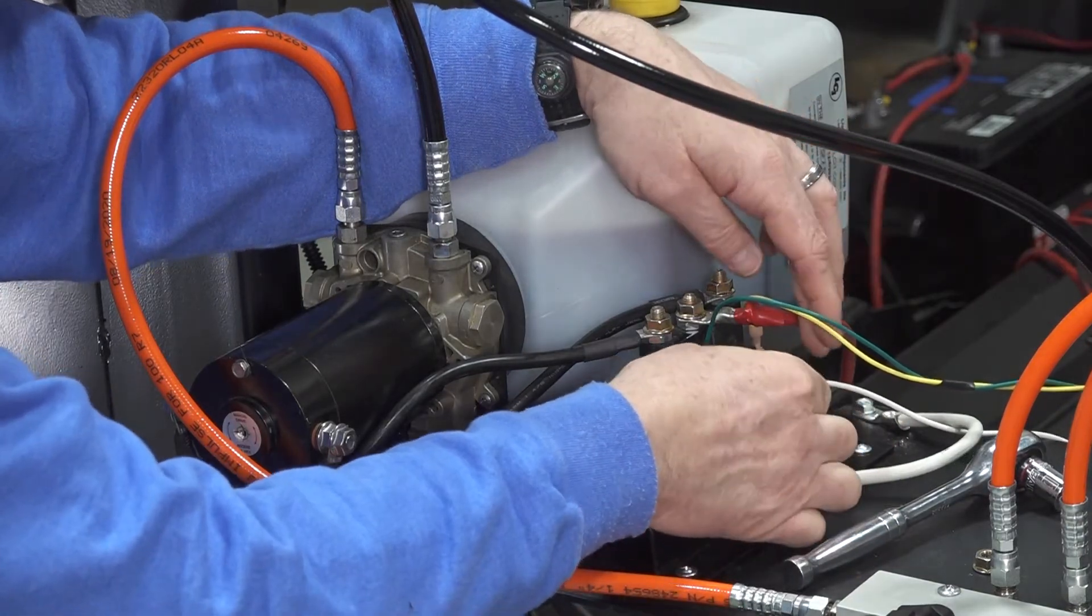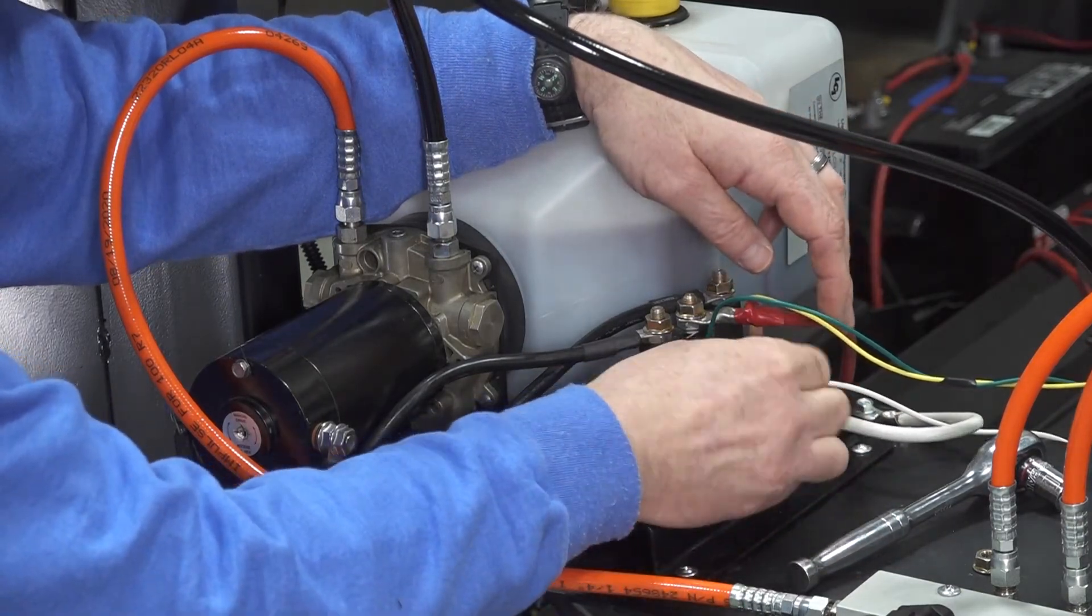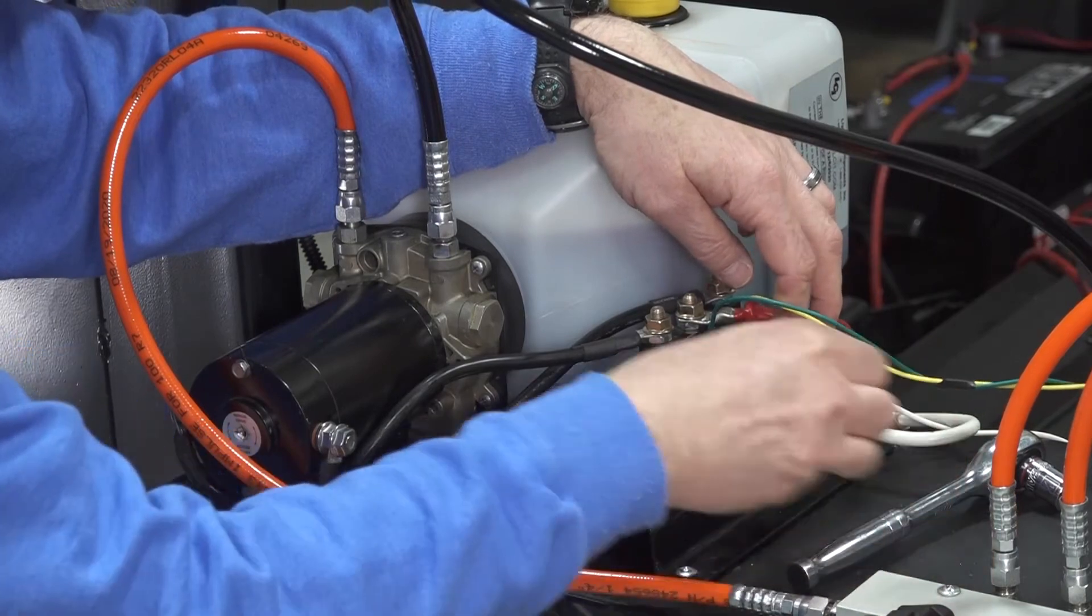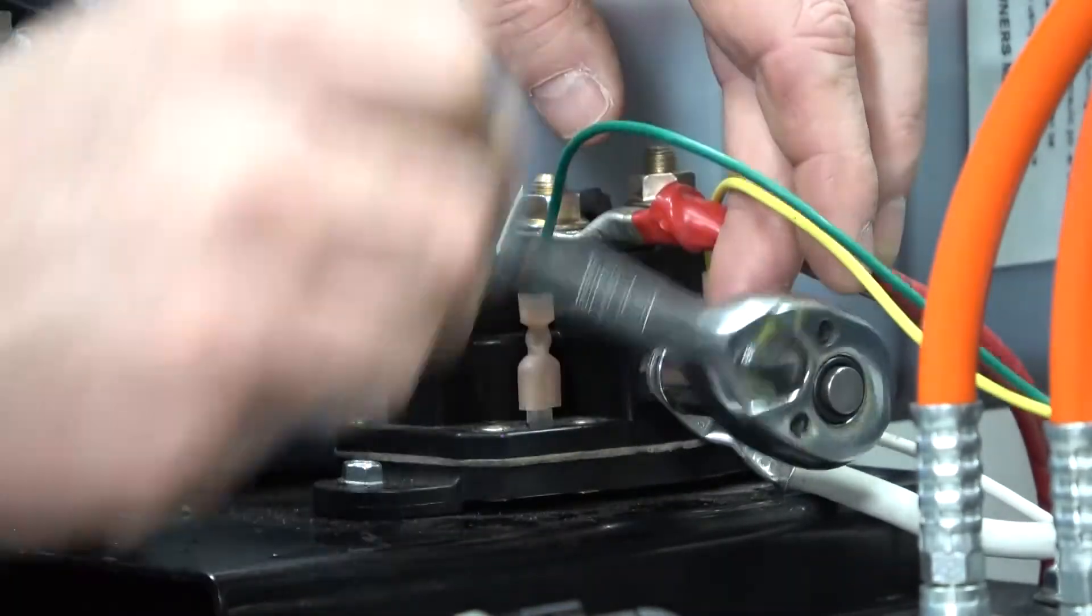After that, install the ground wires on the ground post. Finally, reconnect the power from the battery.